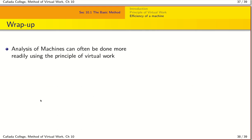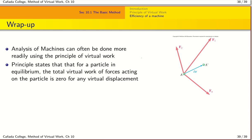That wraps up chapter 10. We'll solve additional example problems to build comfort with virtual work, and you have homework problems coming up. The key idea is that when dealing with machines, it is often easier to use the principle of virtual work — applying virtual displacements and setting total work equal to zero — to find unknown reactions in the system.